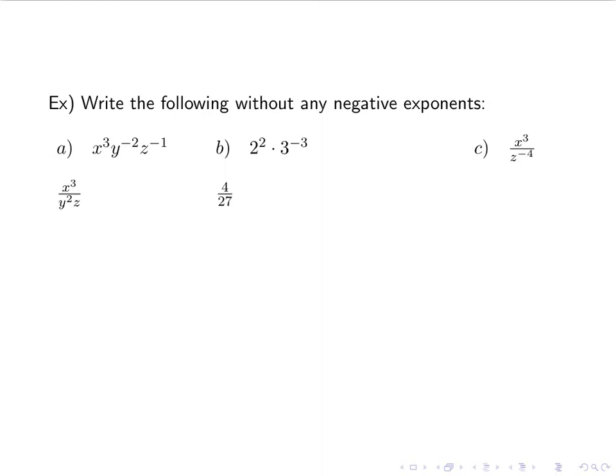For the last one here, x cubed divided by z to the negative 4th. The z has a negative exponent, so we bring it to the other side of the fraction bar — which means we bring it up. So we have x cubed times z to the 4th.